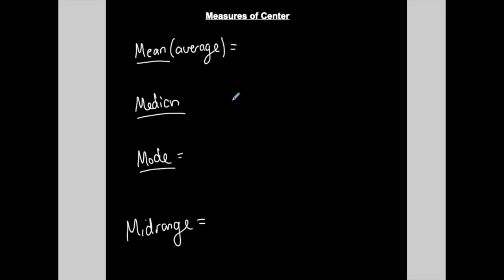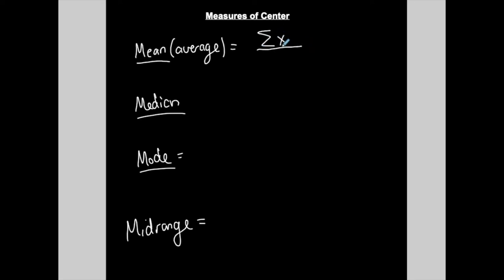Let's talk about the mean first. You probably already know what a mean or average is. What do you do naturally? You add up all the values in a set of data and then divide by the total number of values in that data set. Mathematically, this is represented using sigma notation, which indicates a sum.